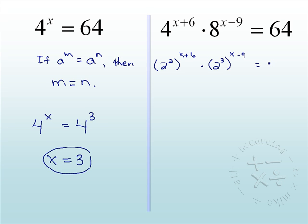And 64 is the same thing as 2 to the sixth. Now they have the same base, but we don't have one exponent on one side and another exponent on the other side. So now we have to do some algebra to get them as one term on the left-hand side here.